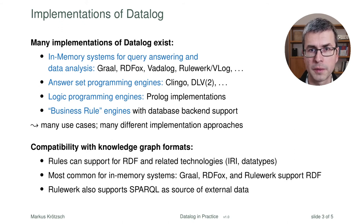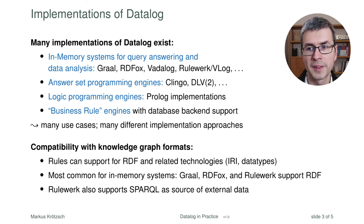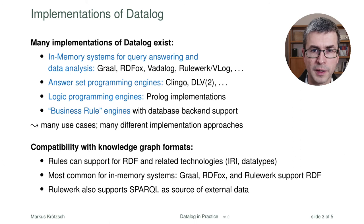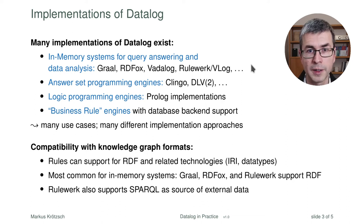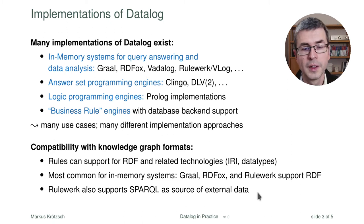Speaking of knowledge graphs, we have to ask: do these systems support RDF? Can we use an RDF graph and run Datalog on top of it? In principle we know this is possible — we could store RDF in a database and have a triple predicate — but there are many specifics like IRIs, blank nodes, and different data types that would be cumbersome to handle manually. It turns out quite a few systems, especially the dedicated Datalog ones, support RDF natively, with built-in support for IRIs in the rules you write, so you can use all of this natively without any kind of translation. In the case of RuleWork, there is also support for SPARQL, thanks to the VLog Datalog reasoner used as a back-end.